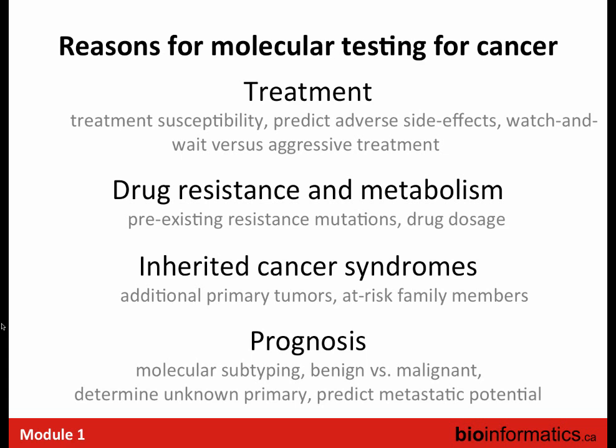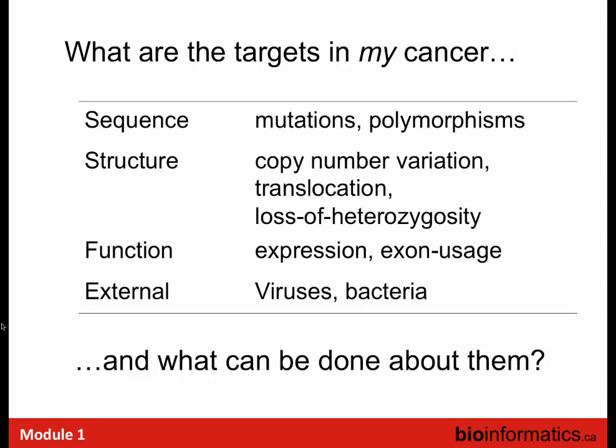Looking at thousands of tumors aggregated together and mapped to pathways is great at the global level, but for single patients the question is: what are the targets in my cancer, what has gone wrong, what's the sequence, what's the structure, what's the function, are there external contributors like viral integration, and what can be done about them?